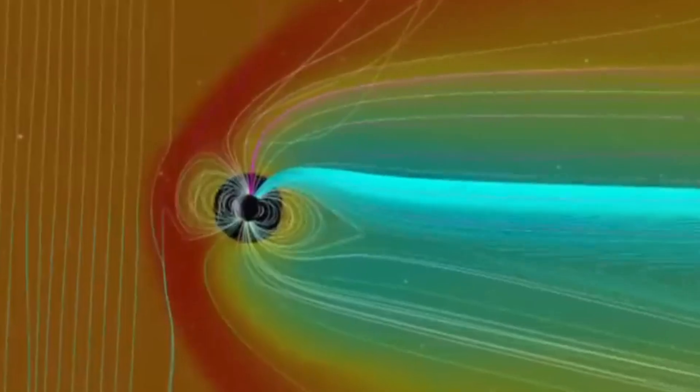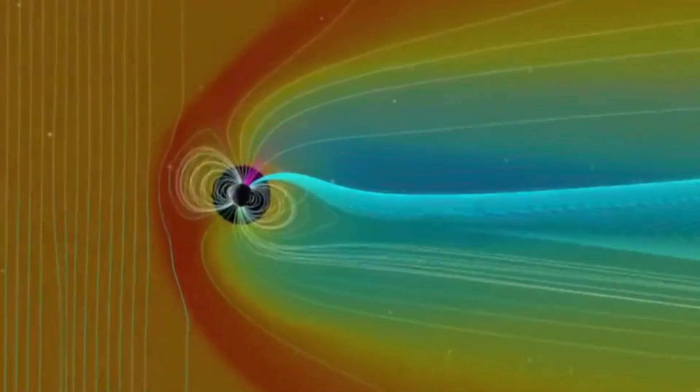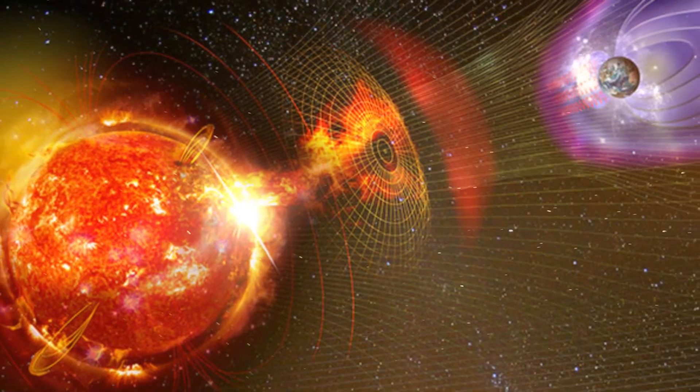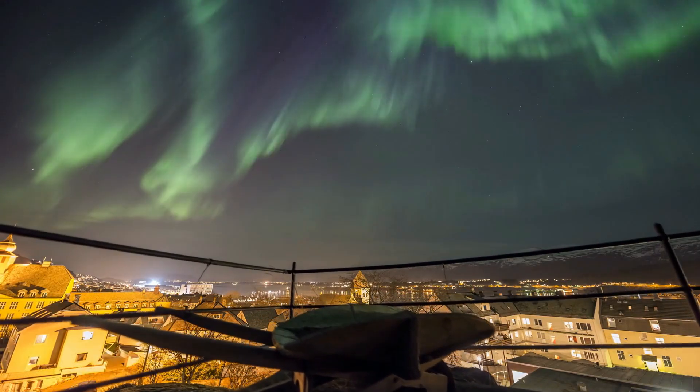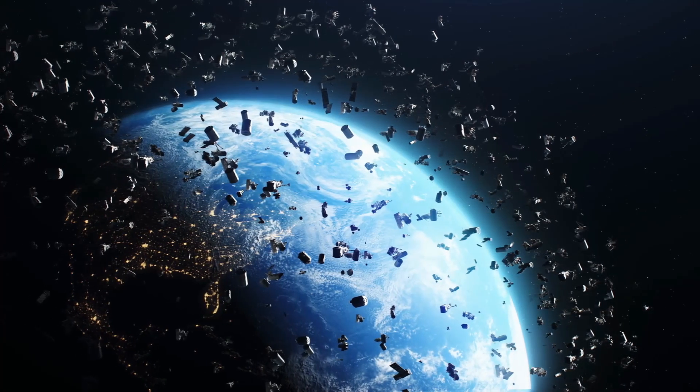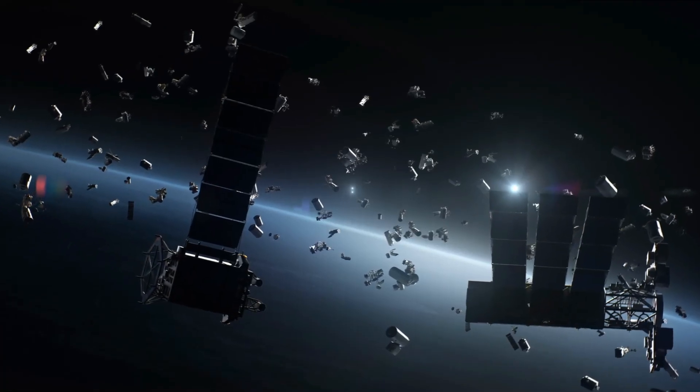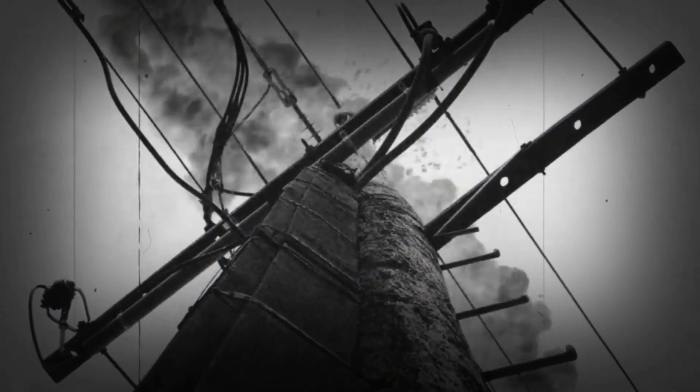When directed towards Earth, these solar storms can interact with our planet's magnetic field, leading to geomagnetic disturbances. While the dazzling auroras are a benign outcome, solar storms also pose risks. They can disrupt communication systems, affect satellite operations, and even damage power grids.